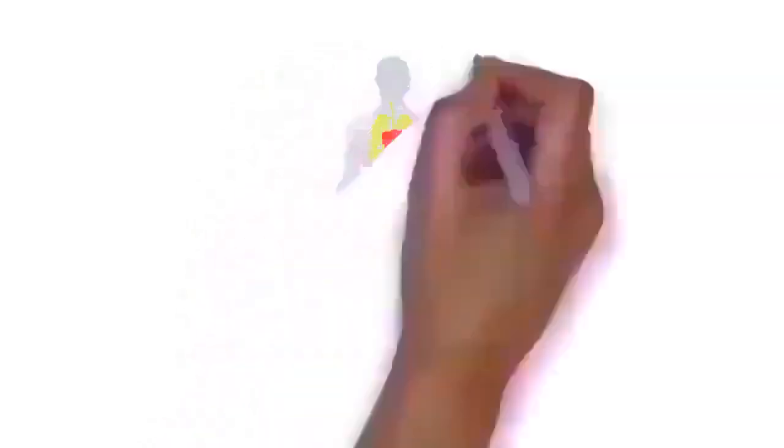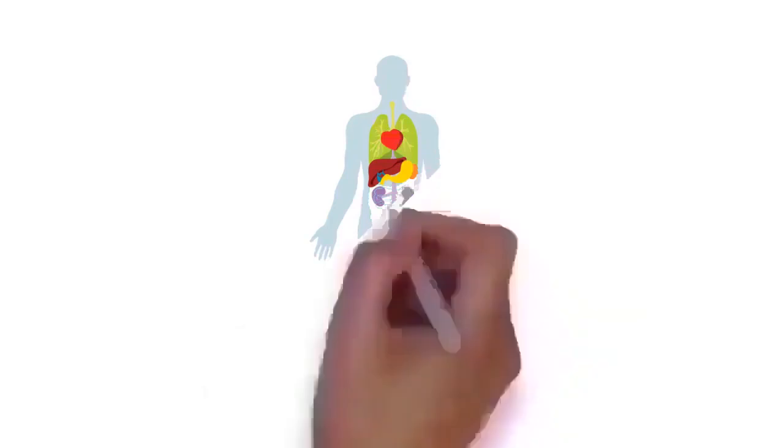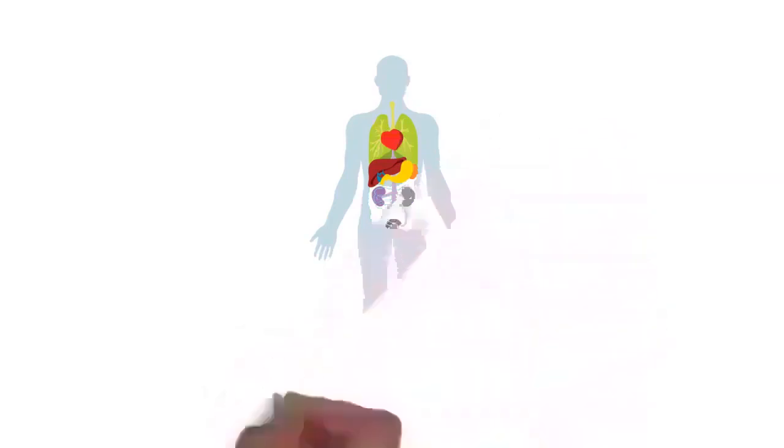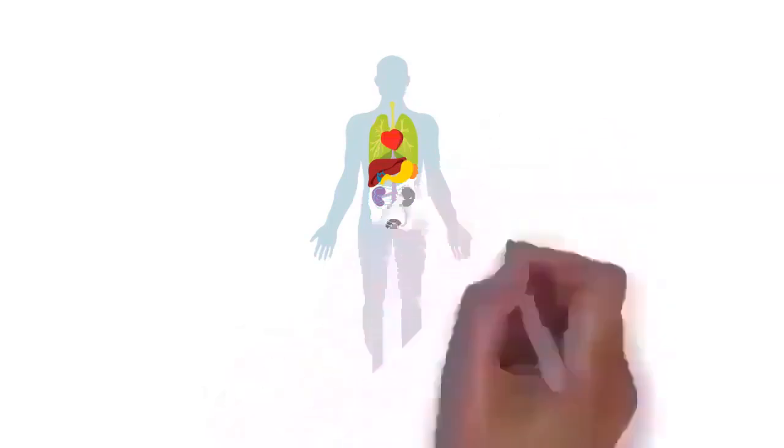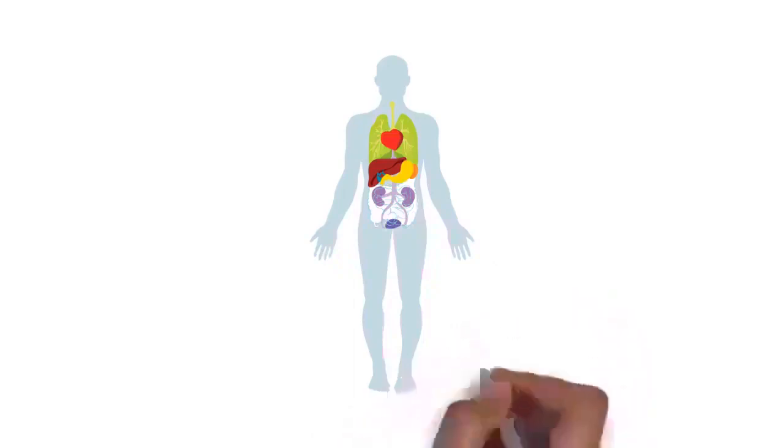The human body is the structure of a human being. It is composed of many different types of cells that together create tissues and subsequently organ systems. They ensure homeostasis and the viability of the human body.